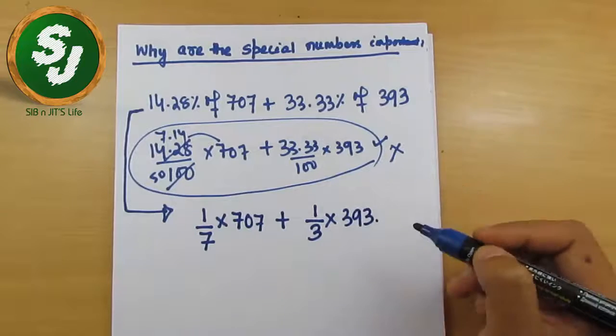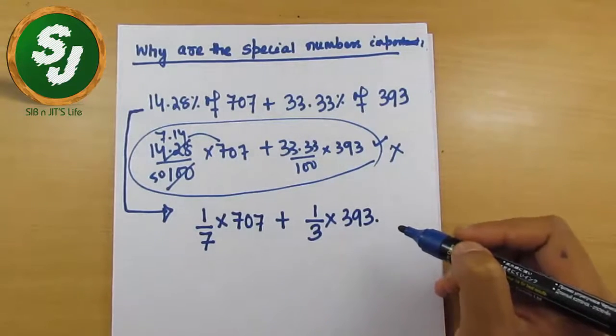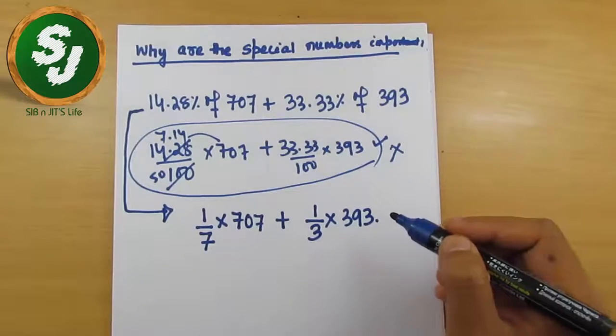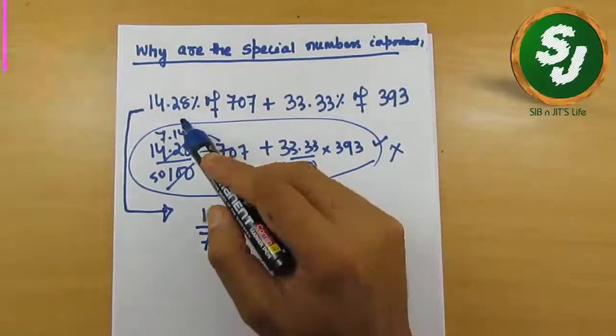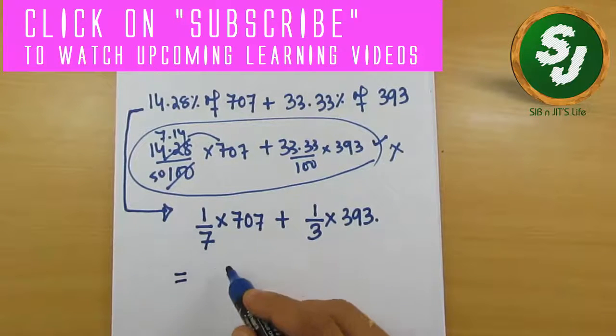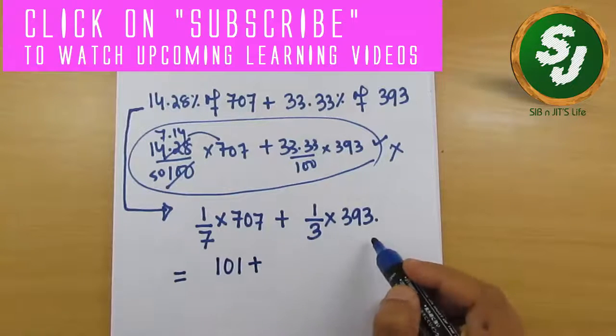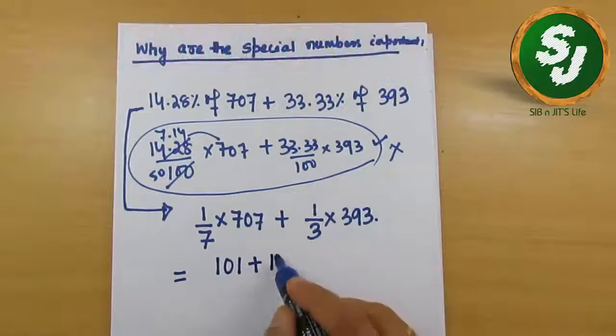There's no need to even write all these things. Rather, you should calculate them in your mind by identifying these spatial numbers. What should be done inside your mind: 1/7 of 707 is nothing but 101 and 1/3 of 393 is 131.